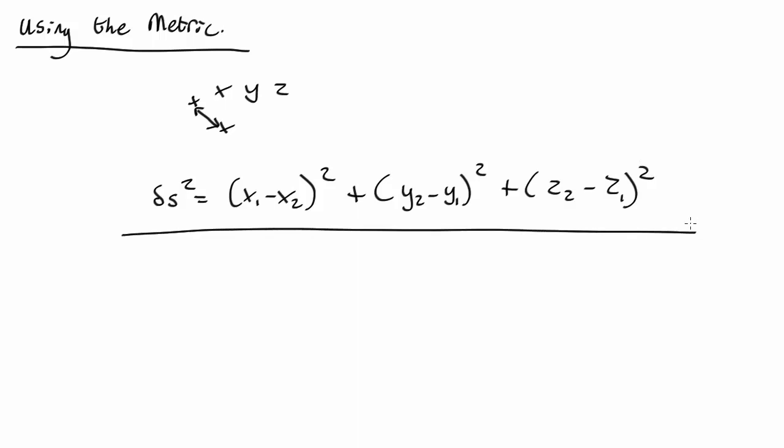Where it becomes a bit trickier is if we're using a different coordinate system, like cylindrical polars. So let's imagine we have cylindrical polar coordinates, so we have a z-axis up there. For an object, we measure that z value, which is that height. We measure the r value, which is this distance here, and we measure this angle over here, theta.